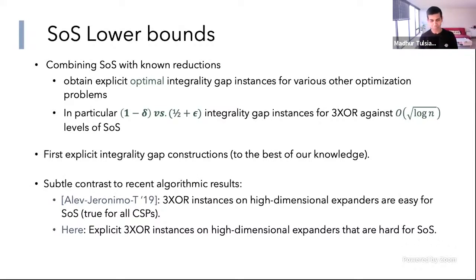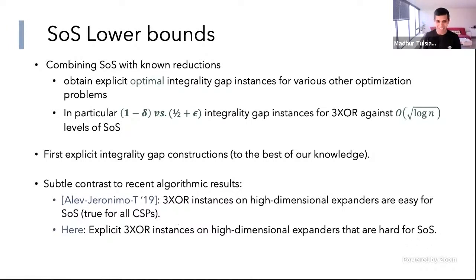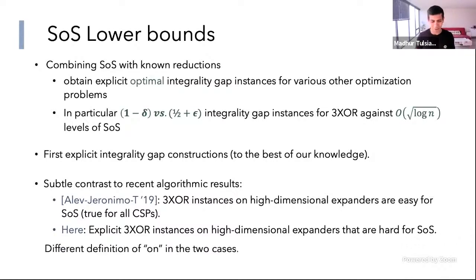The instances are not just explicit — they have a nice structure based on high dimensional expanders, which offers a subtle contrast to known algorithmic results. It's known that for 3XOR instances on high dimensional expanders, a constant number of SOS levels can obtain an arbitrarily good 1 plus epsilon approximation. Yet here I'm telling you that 3XOR instances on high dimensional expanders are hard for square root log n levels of SOS. Both results are correct — it's a different definition of what it means for an instance to be 'on' a high dimensional expander.